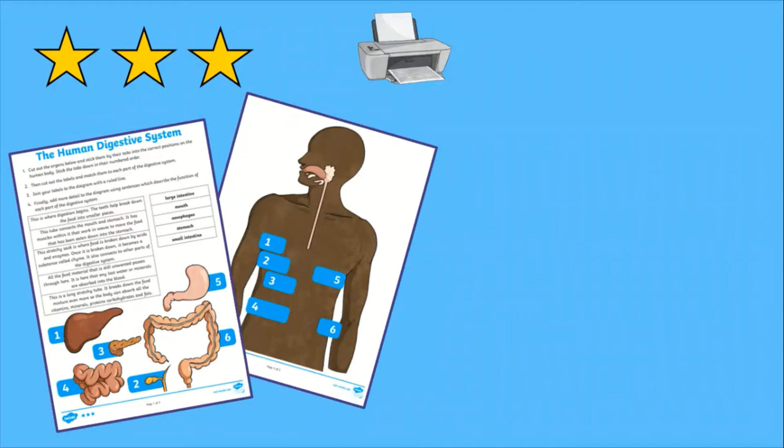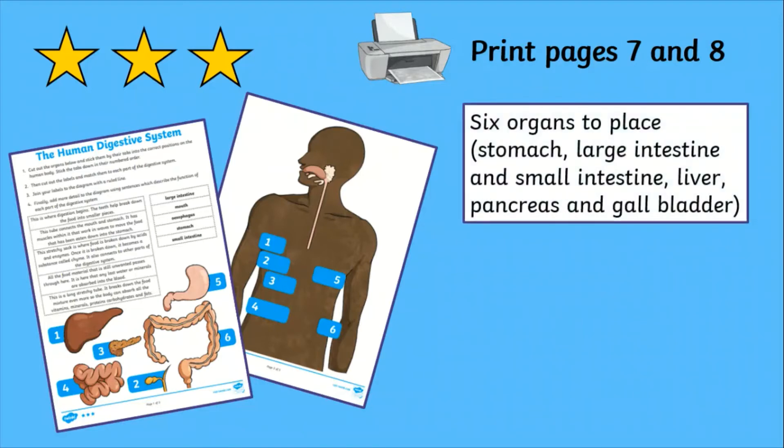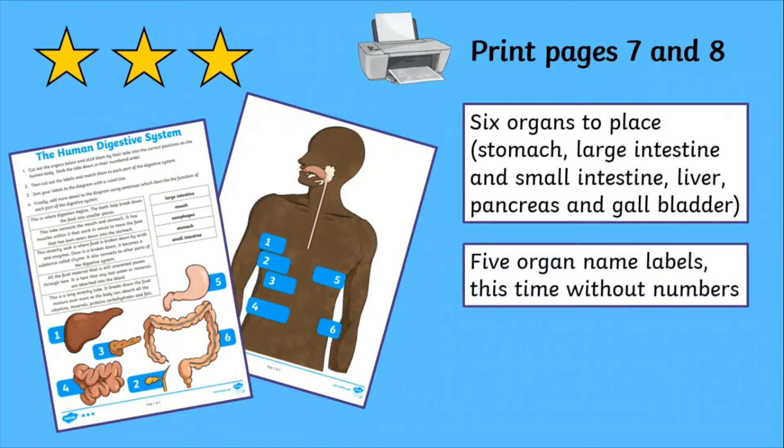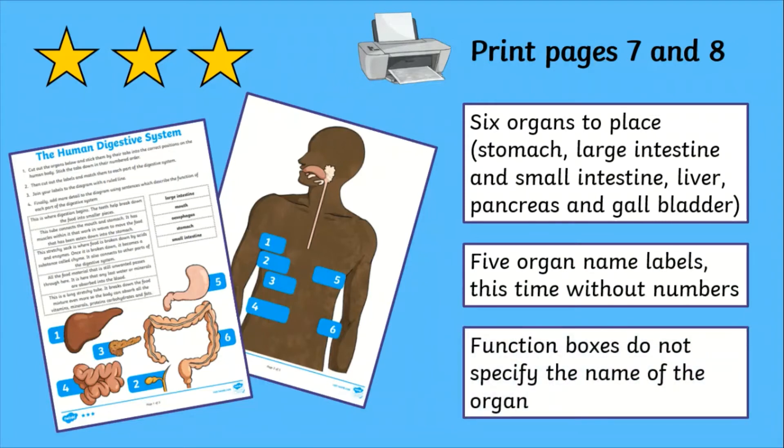For the highest challenge, children need a copy of pages seven and eight. The added challenge is that they have six organs to cut and place, while the name labels and function boxes remain the same as the middle difficulty.